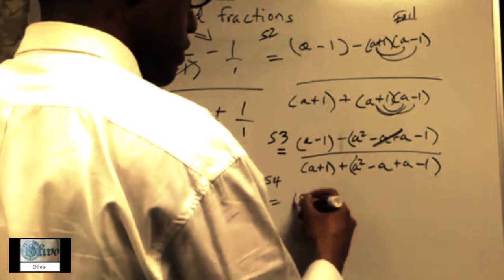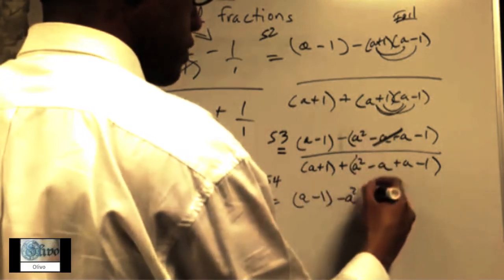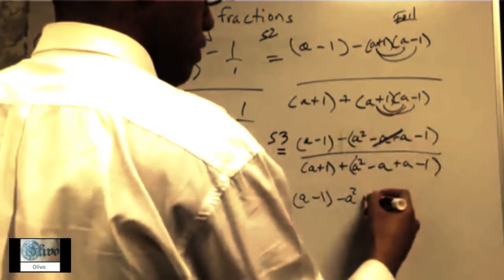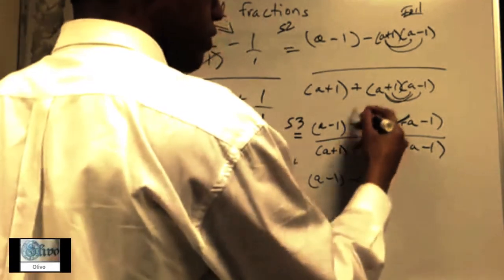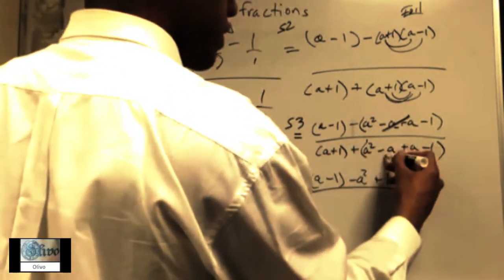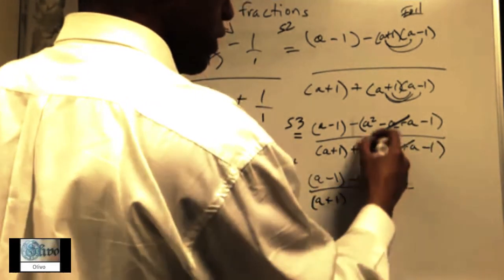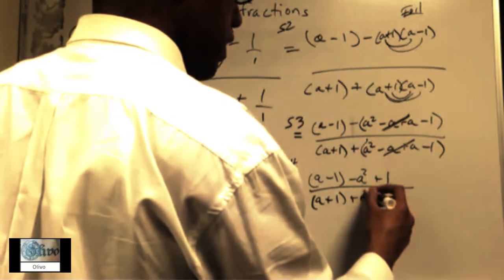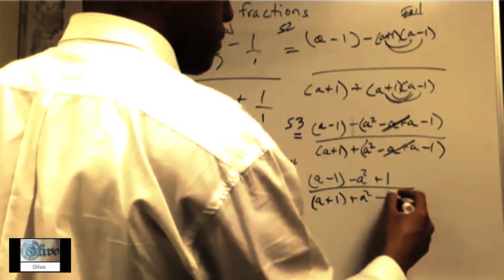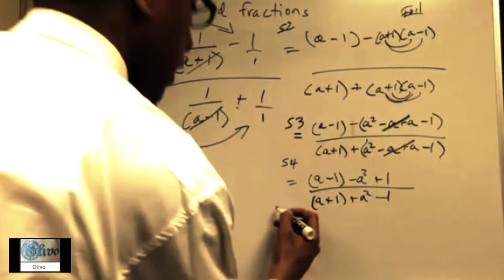So they cancel out, and now you got a-1 minus a² plus 1, because when you distribute the negative you get that. Then over here, these cancel out, so you get a+1 plus a² minus 1.